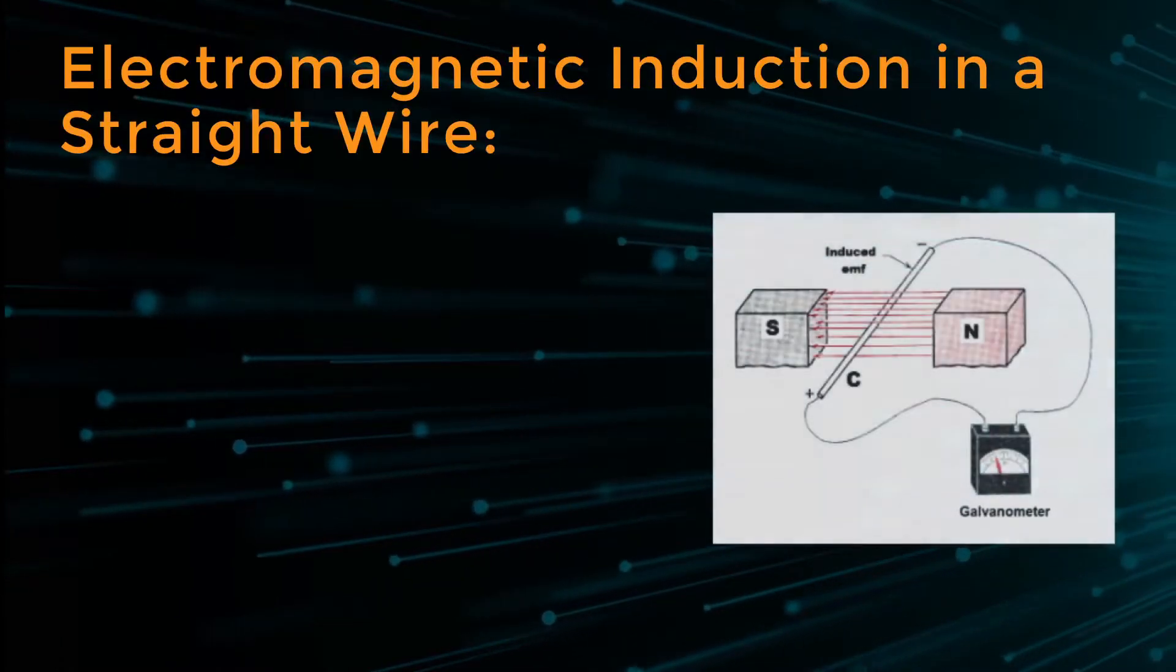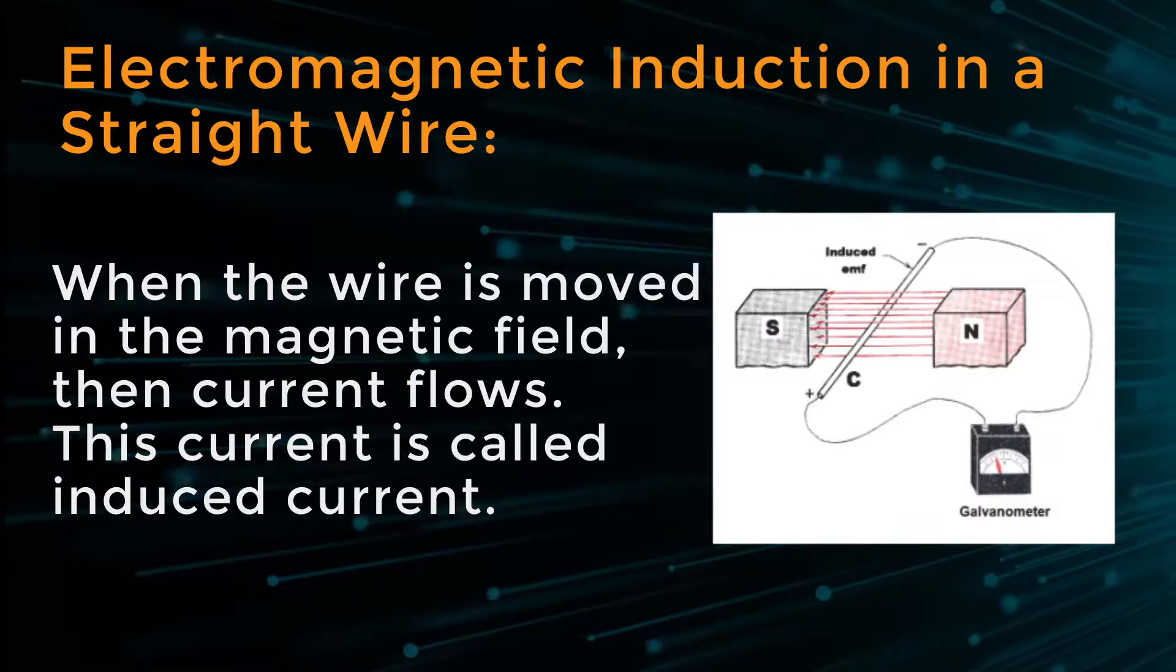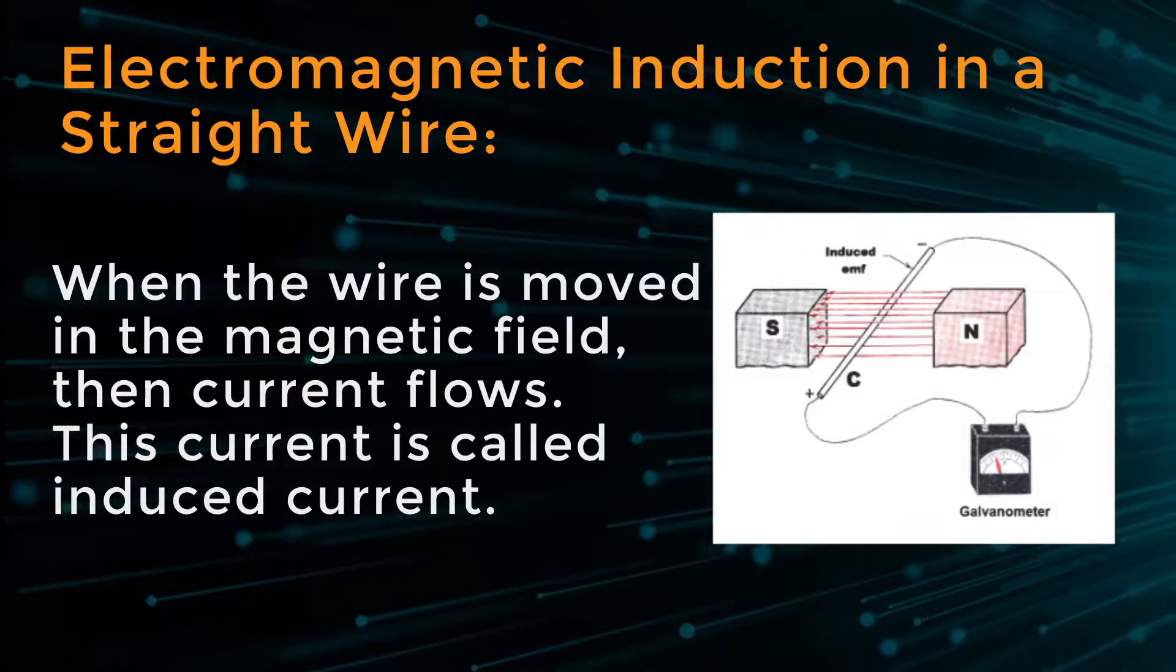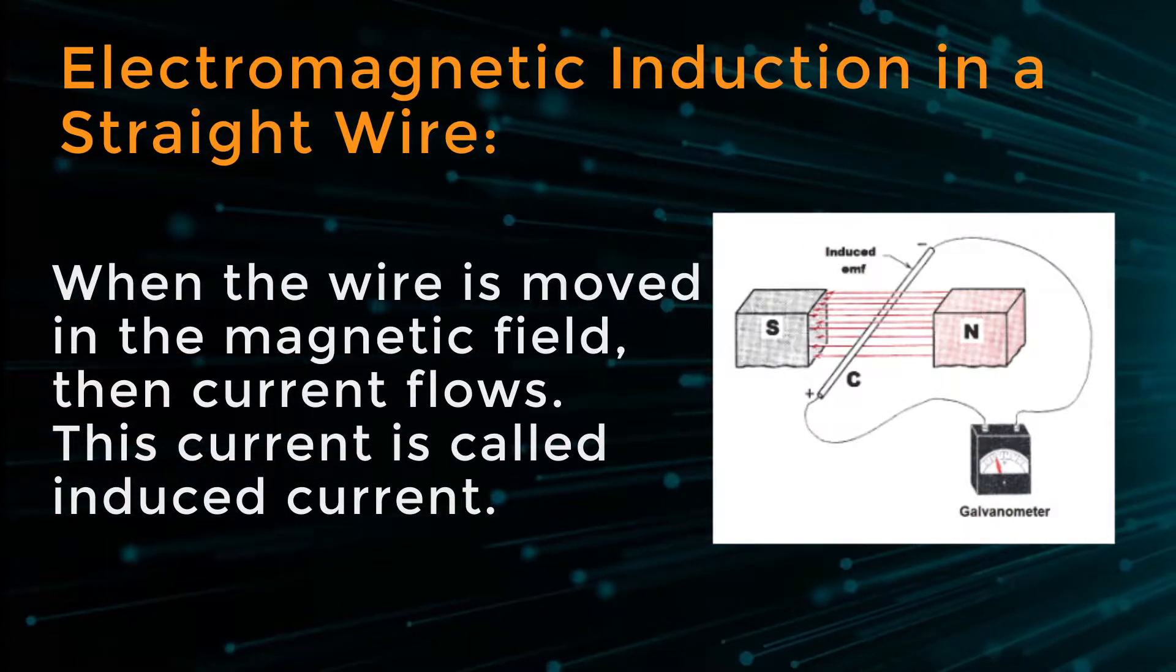Electromagnetic induction in a straight wire: When the wire is moved in the magnetic field, then current flows. This current is called induced current.